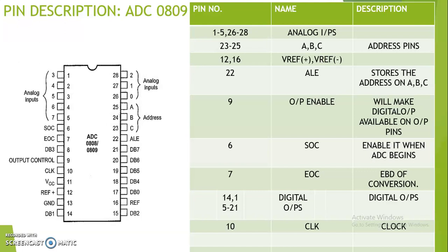This selection is done by means of the address pins A, B, C. The next 3 pins — 23, 24, 25 — are the ABC address pins. Depending on the address pins, one out of the 8 inputs is selected. For example, if ABC has the value 010, that is 2, then Input 2 is selected and its analog signal is converted. If ABC is 111, that means 7, so Input 7 is selected and converted into digital form.